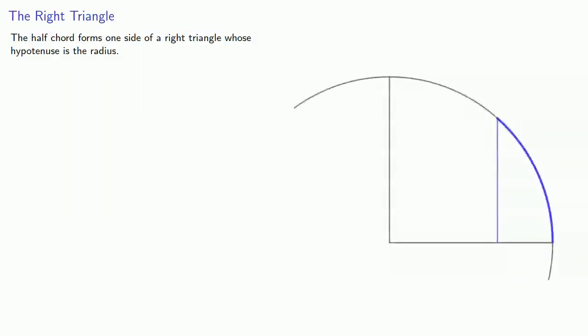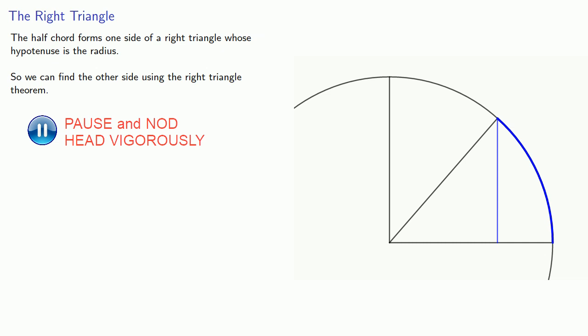Now this half-chord forms one side of a right triangle whose hypotenuse is the radius. So we can find the other side using the right triangle theorem. And note that this actually gives us another half-chord. And if you look at the geometry, this is actually the half-chord of the complementary arc.